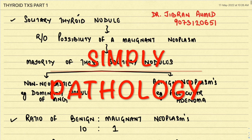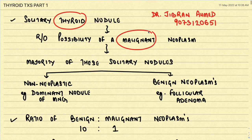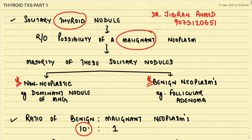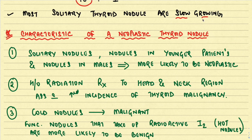Good morning and welcome back. I'm Dr. Gibran, and today we are going to discuss thyroid tumors part one. Whenever a person presents with a solitary thyroid nodule, there is a risk we have to rule out a malignant neoplasm. Fortunately, the majority of solitary nodules are either non-neoplastic swellings — for example, a dominant nodule in multinodular goiter — or a benign neoplasm like follicular adenoma. The ratio of benign to malignant neoplasm involving the thyroid is approximately 10 to 1.